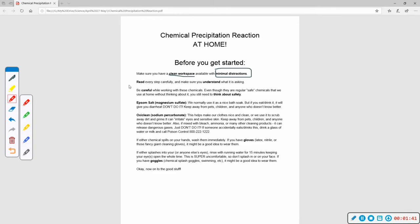As with anything where you're following instructions, you need to read every step carefully. And make sure that you understand what it is asking. So if I write something and it makes absolutely no sense, read it again. Read it a second time. Think about what it's saying. If it still makes no sense, get on Zoom, get on Dojo, ask me, Ms. Riggle, what are you talking about? Be careful while you work with these chemicals. Even though they're regular and safe chemicals that we use at home without thinking about, you still need to be thinking about safety.